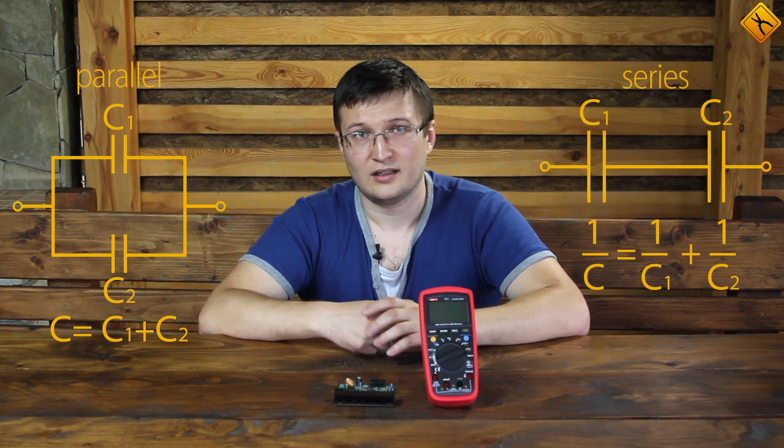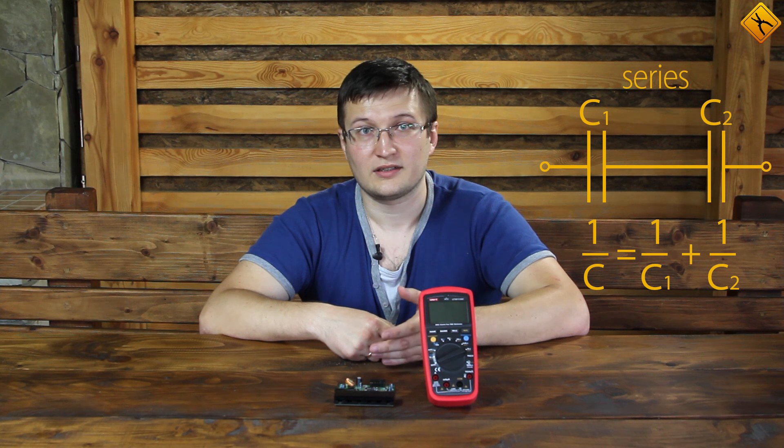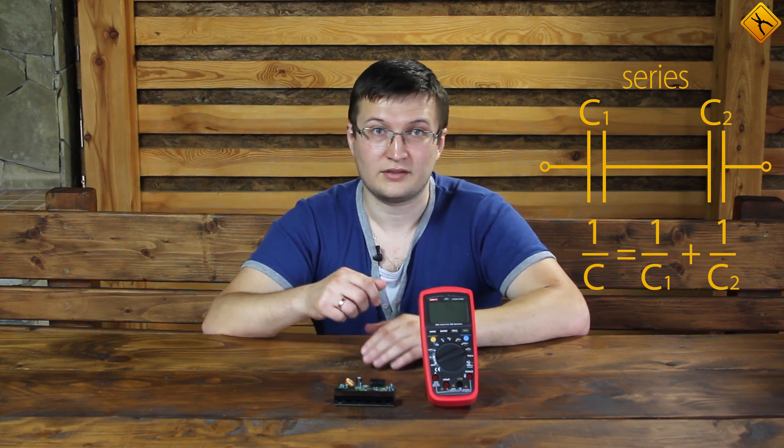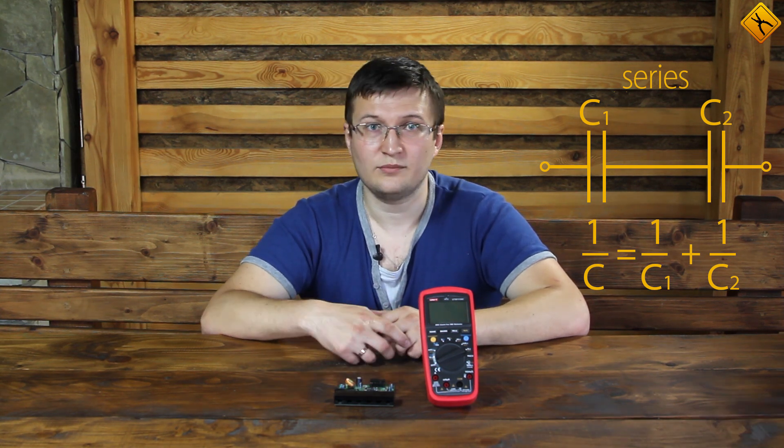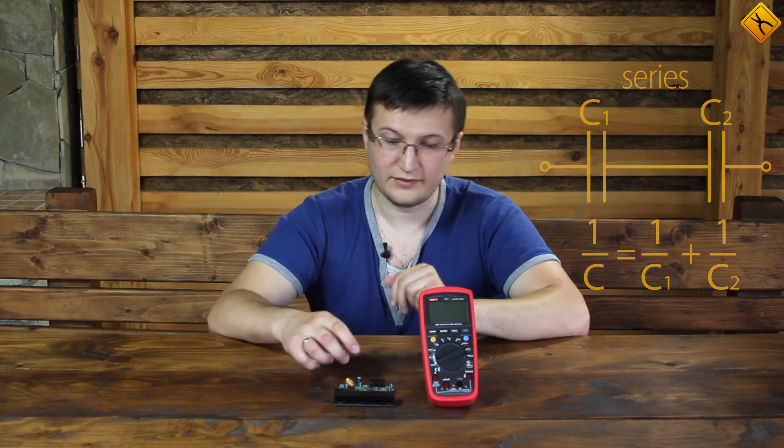However, if they are in a series, then we have a more complicated formula. We have to deal with inverted values. So, 1 divided by C equals 1 divided by C1 plus 1 divided by C2.